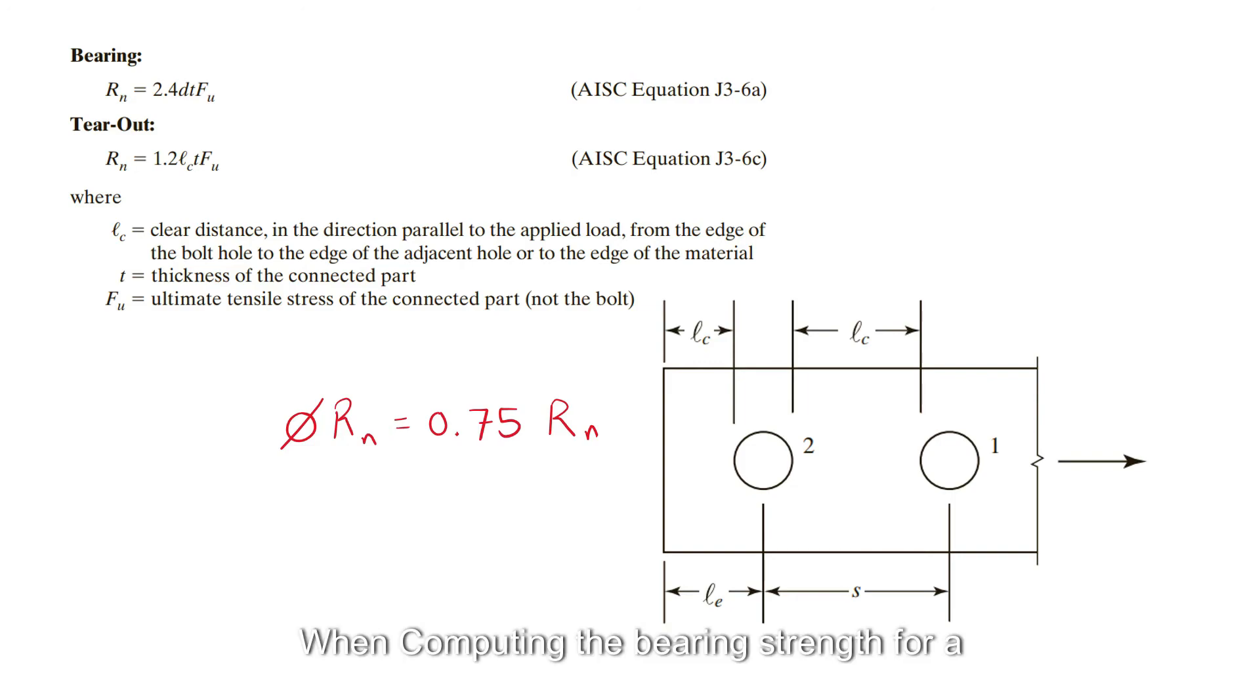When computing the bearing strength for a bolt, use the distance from that bolt to the adjacent bolt, or edge in the direction of the bearing load on the connected part. For the case shown, the bearing load would be on the left side of each hole. Thus, the strength for bolt 1 is calculated with L sub c measured to the edge of bolt 2, and the strength for bolt 2 is calculated with L sub c measured to the edge of the connected part.